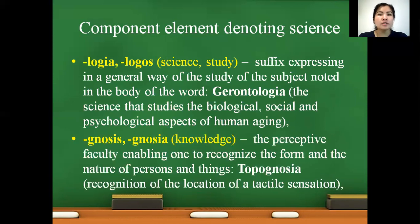Next: gnosis, gnosia — meaning is knowledge. Example: topognosia. Topognosia means recognition of the location of a tactile sensation.